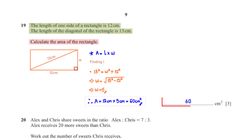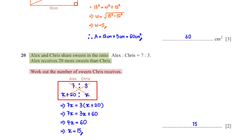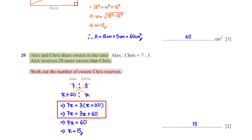Alex and Chris share sweets in the ratio 7 : 3. Alex receives 20 more sweets than Chris. Work out the number of sweets Chris receives. Letting x be Chris's sweets, Alex has x + 20. Cross-multiplying and expanding gives 3x + 60 = 7x, so 4x = 60, and x equals 15.